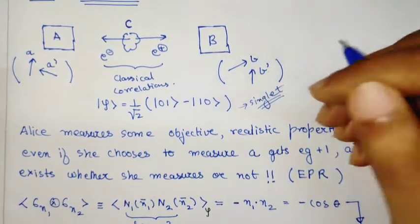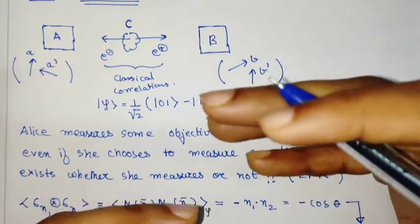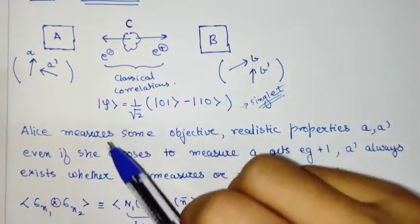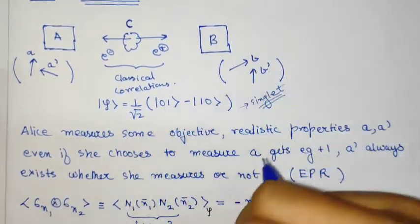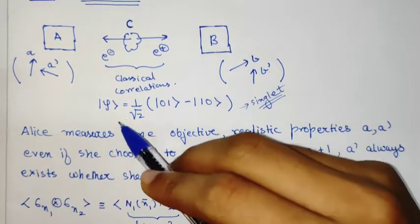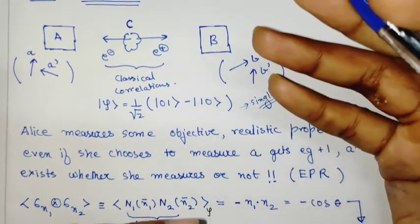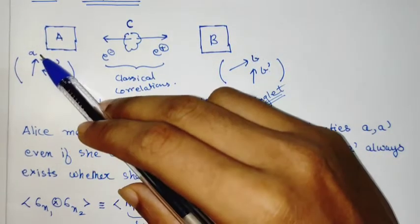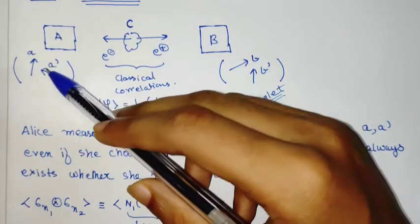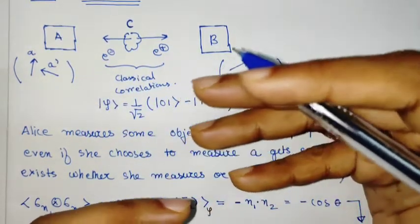The main point as per EPR is that these properties of spins along these axes are inherent or objective properties associated with the particle, for example the electron. That means it doesn't matter whether I measure A or A'. Measuring A doesn't mean that A' doesn't exist.